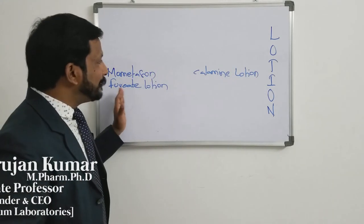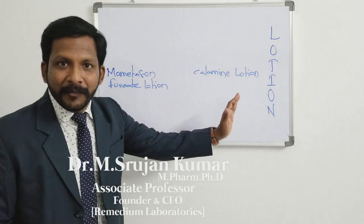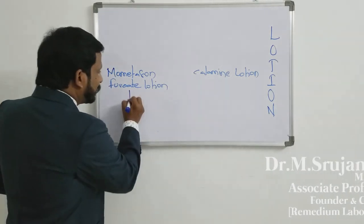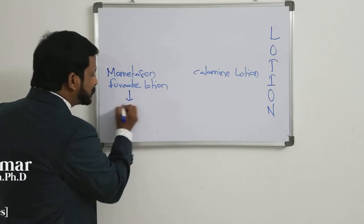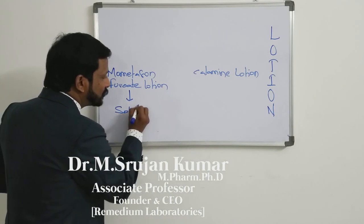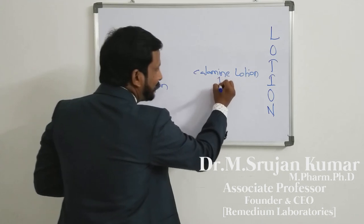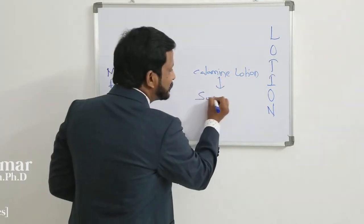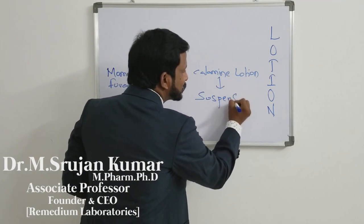If you can see, both are lotions. What is the difference between both? Mometasone Furoate Lotion — the principle involved in the formulation is solution. Calamine Lotion — the principle involved in the formulation is suspension.